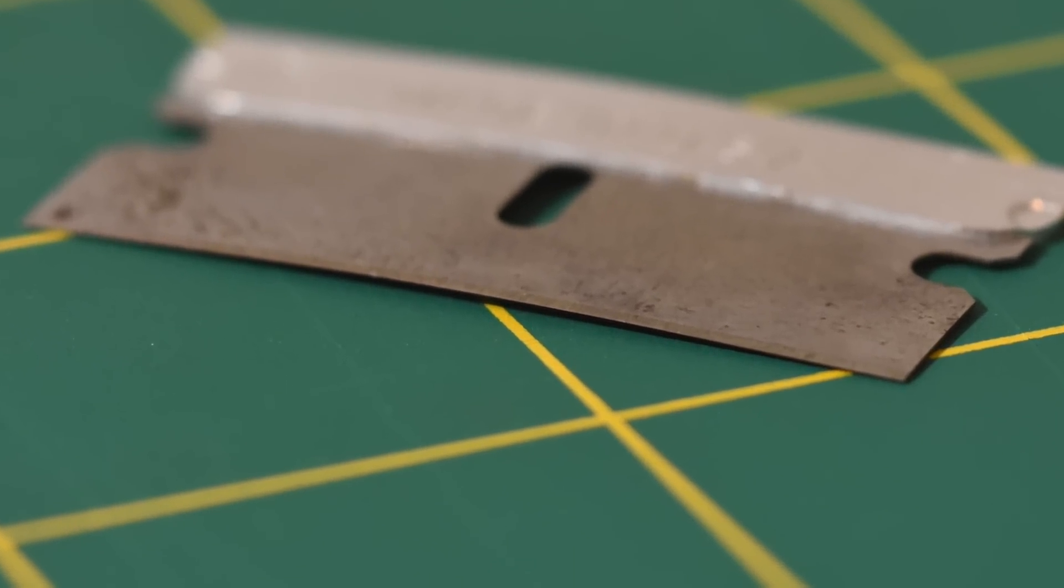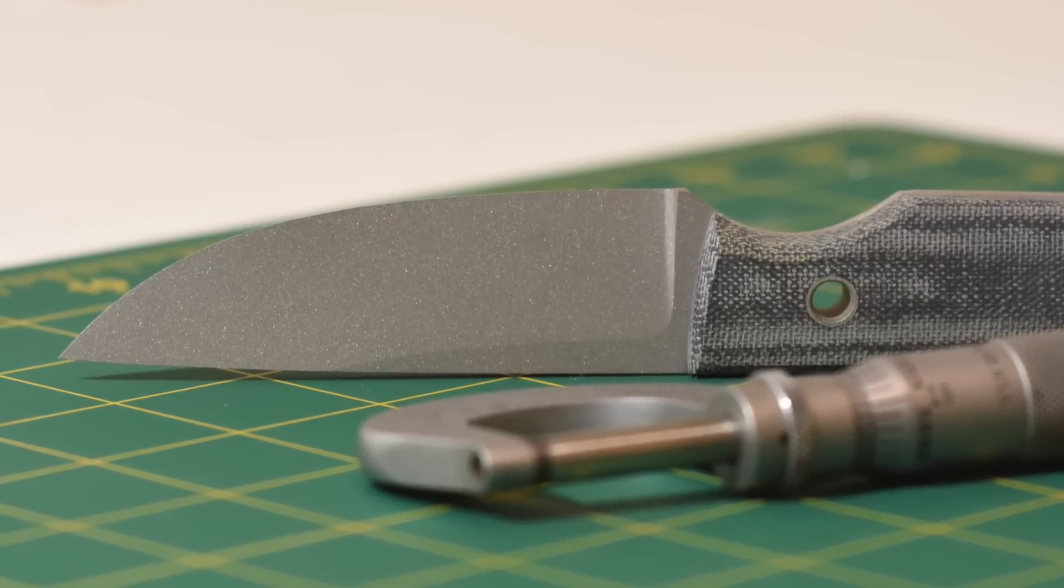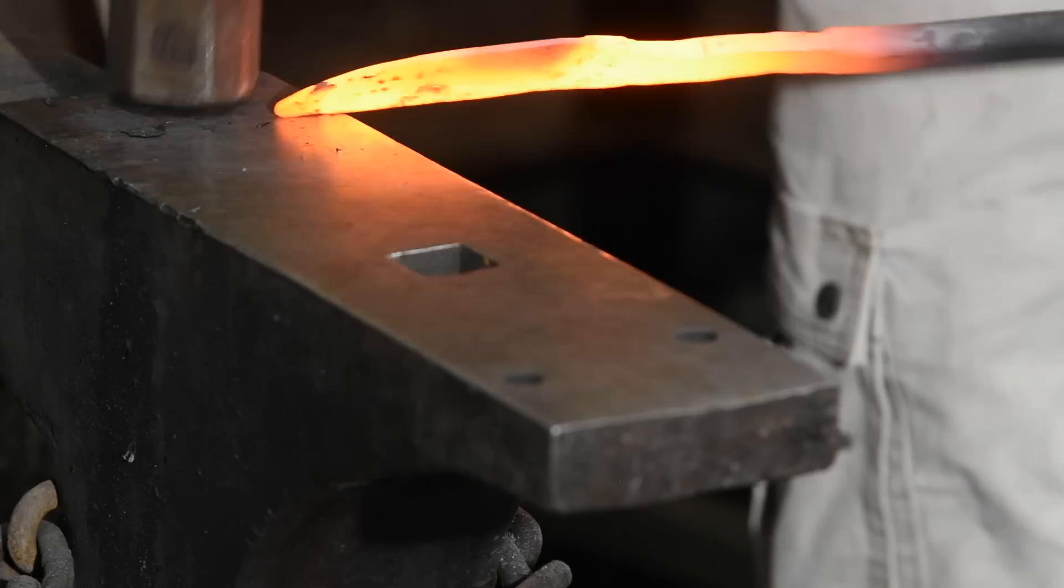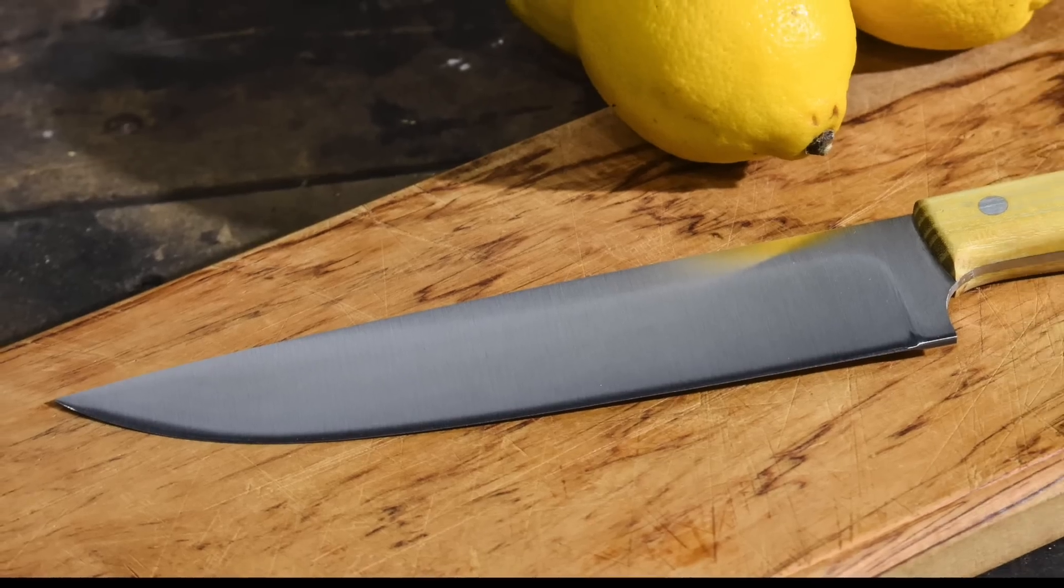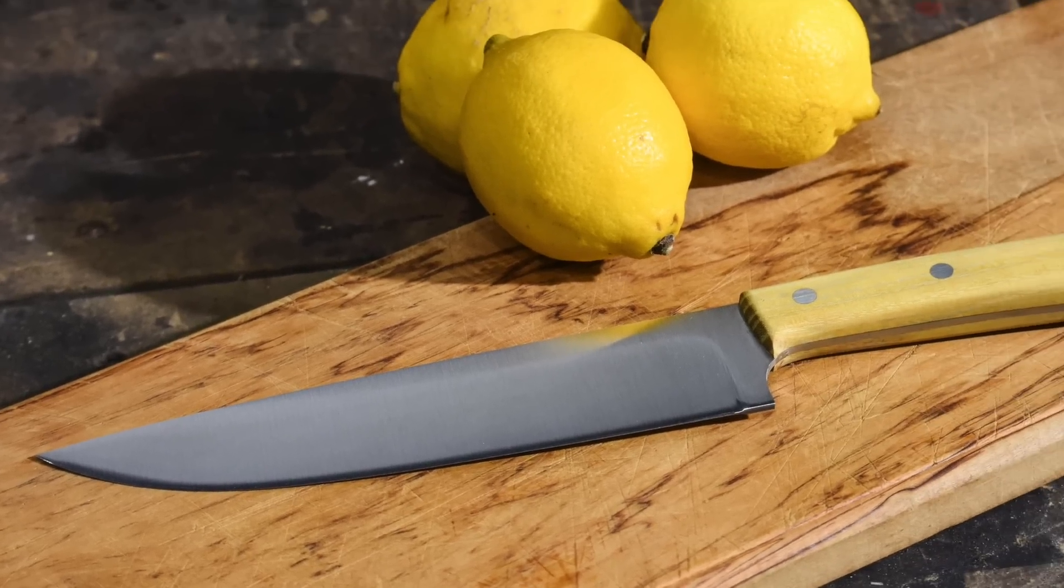The idea that there's such a thing as a perfect knife or a perfect edge is totally bogus. All you have are trade-offs. But ultimately, it all comes down to this, the cutting edge of the blade. So let's break that down.